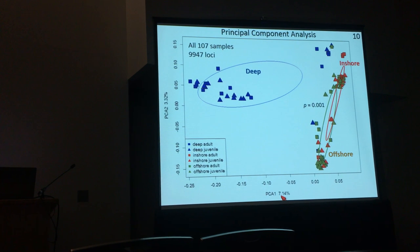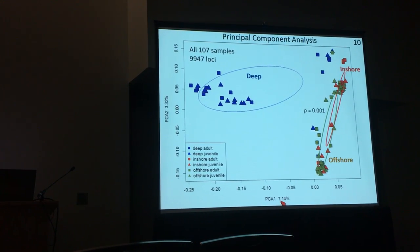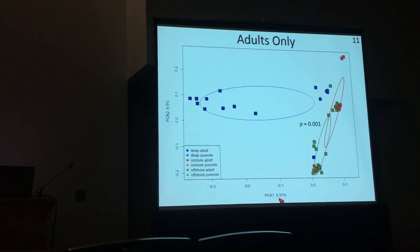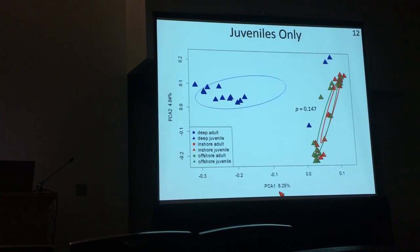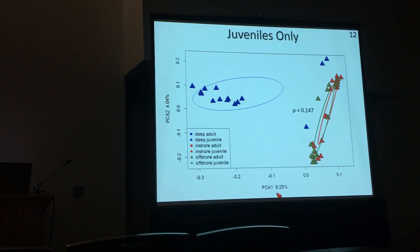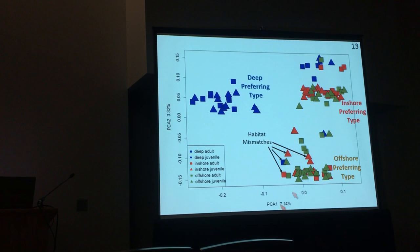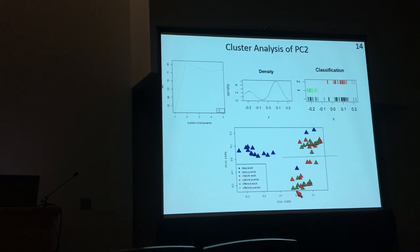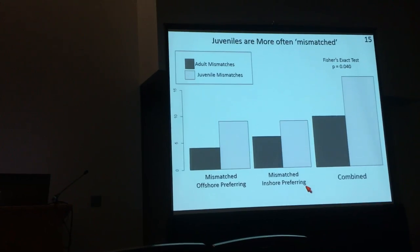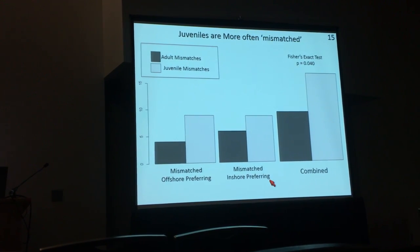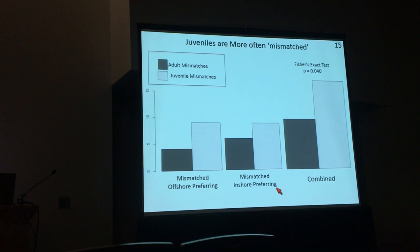We asked whether juveniles are more likely to show a mismatch between clusters than adults. Running the PCA on adults only, clusters are more clearly defined. Running it on juveniles only, the clusters are more poorly defined and no longer significant. This is consistent with the idea that some mismatched juveniles are under selection but have not yet died. Statistically, using a cluster analysis on the second principal component, the number of mismatched juveniles is larger than mismatched adults across both habitat types — and combining these, that difference is significant by Fisher's exact test.